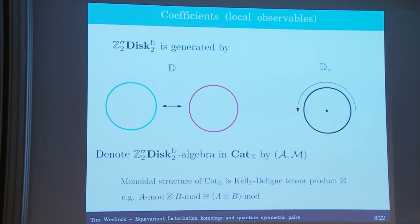The monoidal structure is basically what you would imagine: it's like a k-linear tensor product of k-linear categories. So let's look at some embeddings and isotopies to see what kind of structures appear.